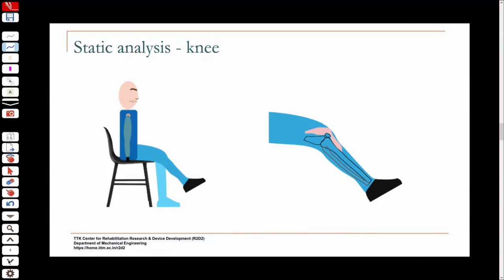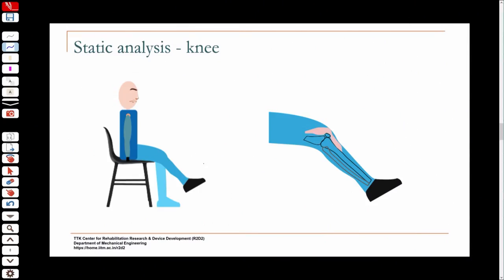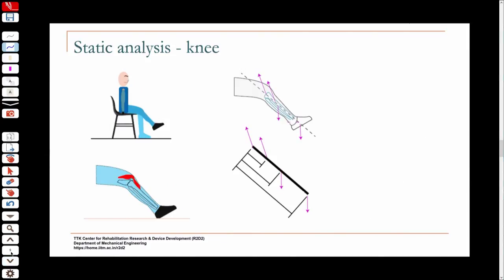For strengthening the quadriceps, knee strengthening exercises are typically prescribed — essentially quadriceps strengthening exercises. A common approach is wearing a weight boot or ankle weights and performing extension and flexion movements. If we need to analyze holding the leg at a certain position, this is a static analysis very similar to what we have done before, using a free body diagram.